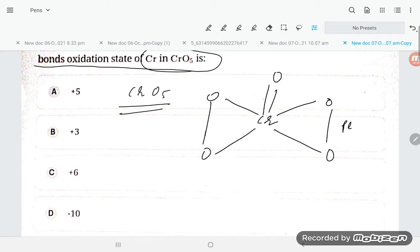This bond is the peroxide linkage. Here is also peroxide. In peroxide, the oxidation state of oxygen is minus 1. It is also minus 1, minus 1, and so on. This is normal oxide, so minus 2.